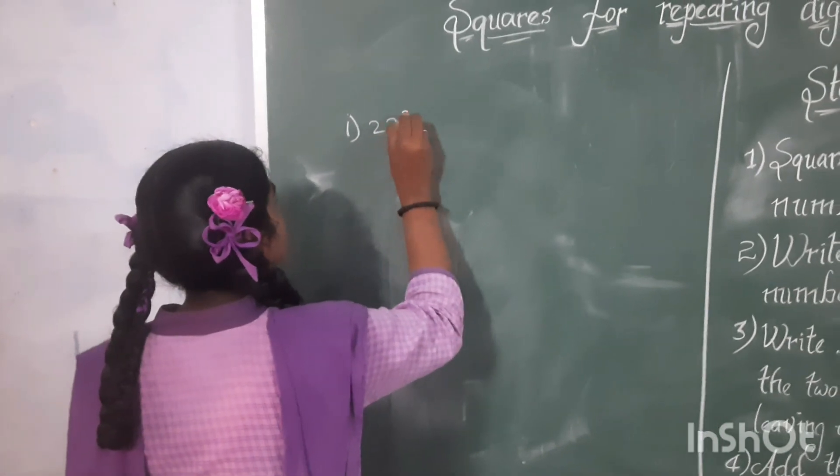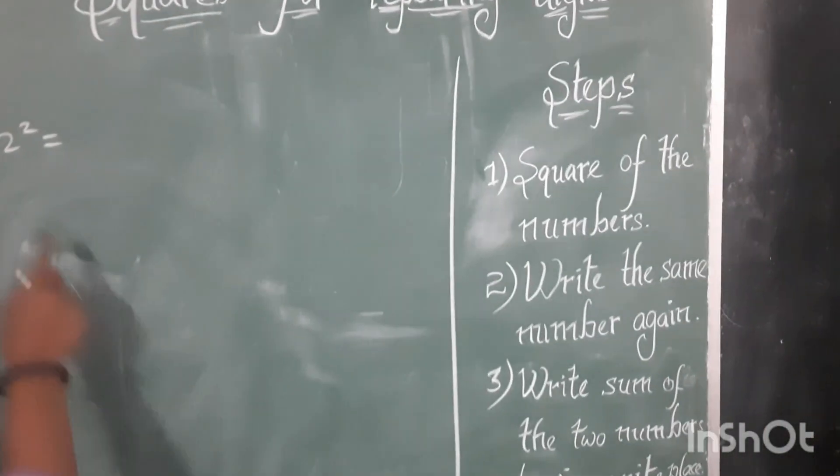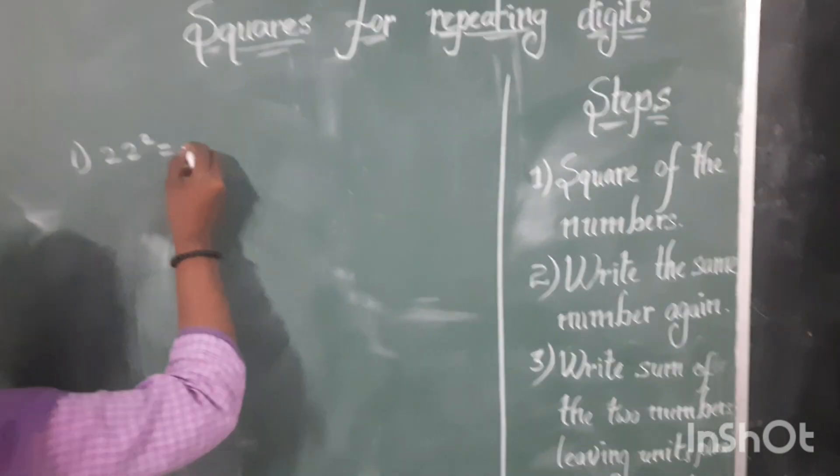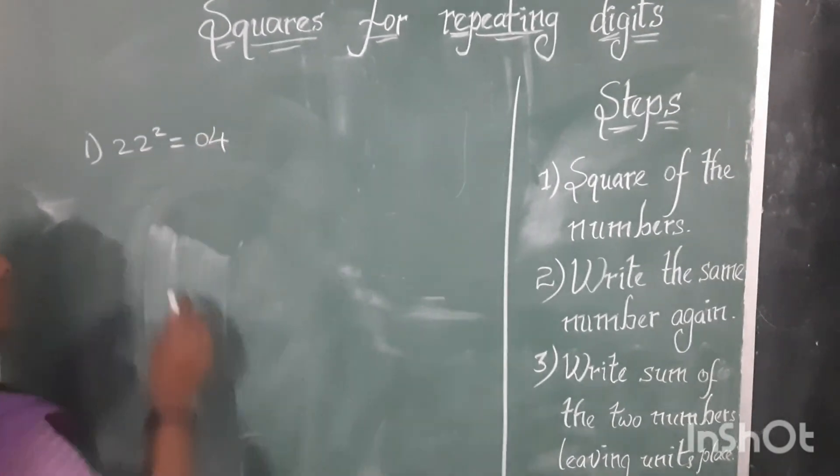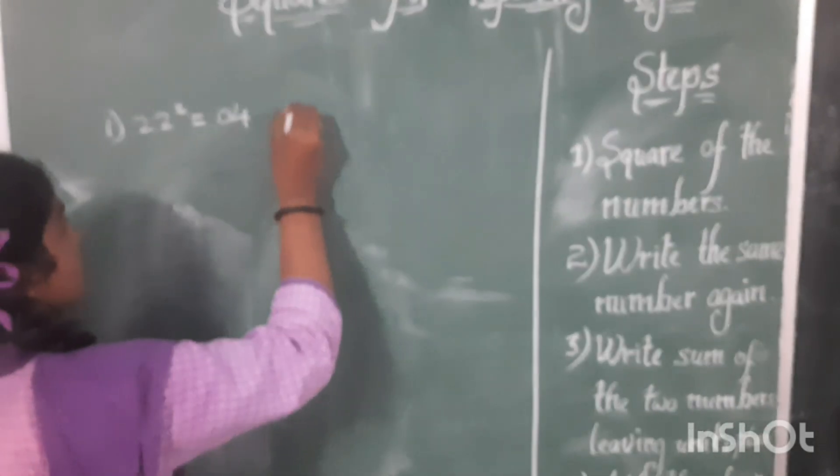22 square. Step 1, square of the number. Here 2 is a number which square is 4. I am writing 04. Second step, write the same number again. I am writing 04 again.